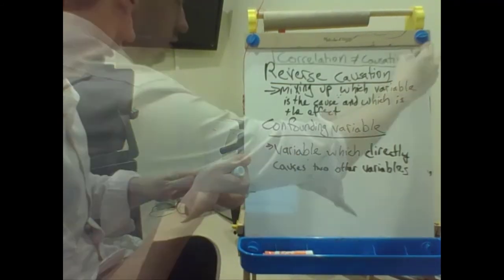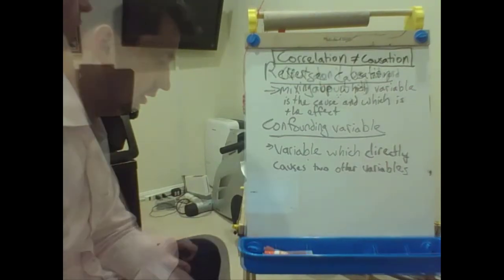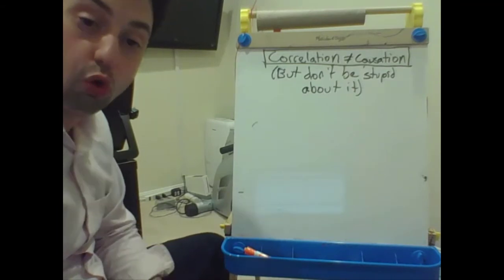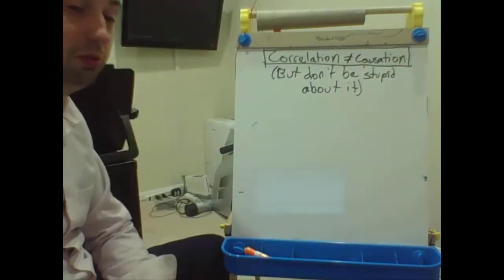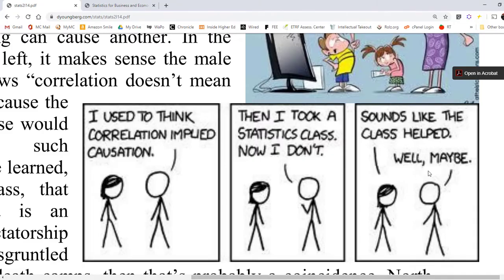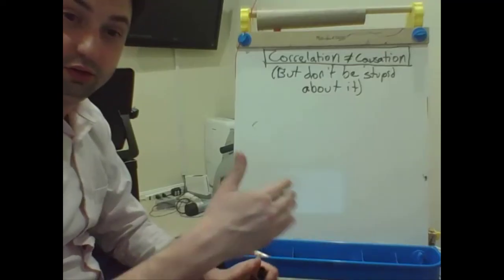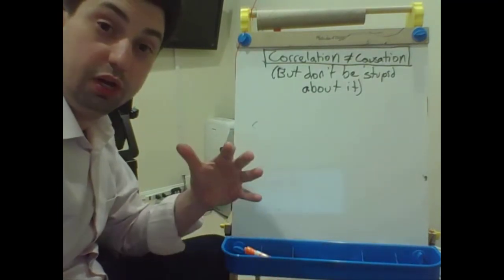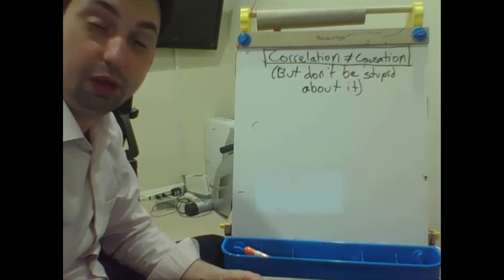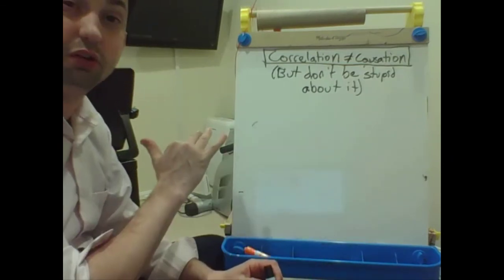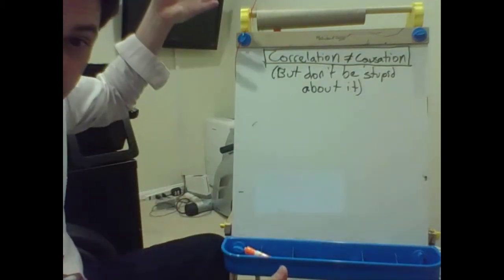Remember, correlation is not causation. But don't be stupid about it. While it's true correlation is not the same thing as causation, that doesn't mean they're completely unrelated — just because you see two correlated variables doesn't mean they can't possibly be connected. Consider this XKCD comic: 'I used to think correlation implied causation. Then I took a statistics class. Now I don't.' 'Sounds like the class helped.' 'Well, maybe.' Time spent studying statistics is positively correlated with statistics knowledge, but that doesn't mean they're not connected.